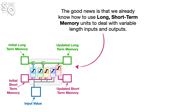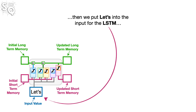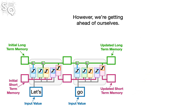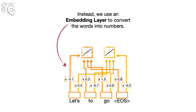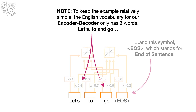The good news is that we already know how to use long short-term memory units to deal with variable length inputs and outputs. For example, if the input sentence is 'lets go,' we put 'lets' into the input for the LSTM, then unroll the LSTM, and plug 'go' into the second input. However, we can't just jam words into a neural network. Instead, we use an embedding layer to convert the words into numbers. To keep the example simple, the English vocabulary for our encoder-decoder only has three words — lets, to, and go — and the EOS (End of Sentence) symbol.